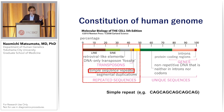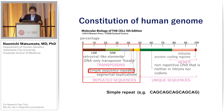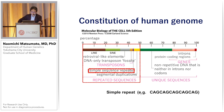Now I'm going to switch to repeats. This is the constitution of the human genome. When we do exome sequencing, we only focus on the gene area — only 2%. But the human genome is notorious, especially for repetitive sequencing areas. Half of the genome is indeed repetitive sequence area.